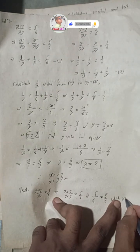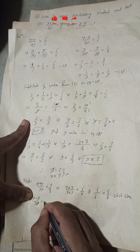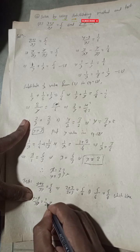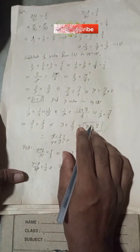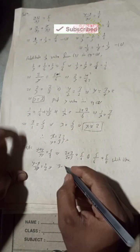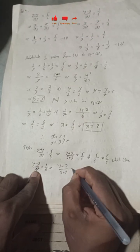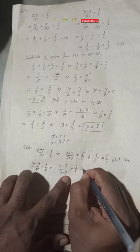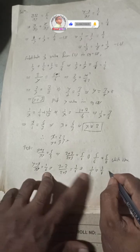For the second equation, (y - x) / xy = 1/6. Putting y = 3 and x = 2: (3 - 2) / (2 × 3) = 1/6, which gives 1/6 = 1/6. This is also true.